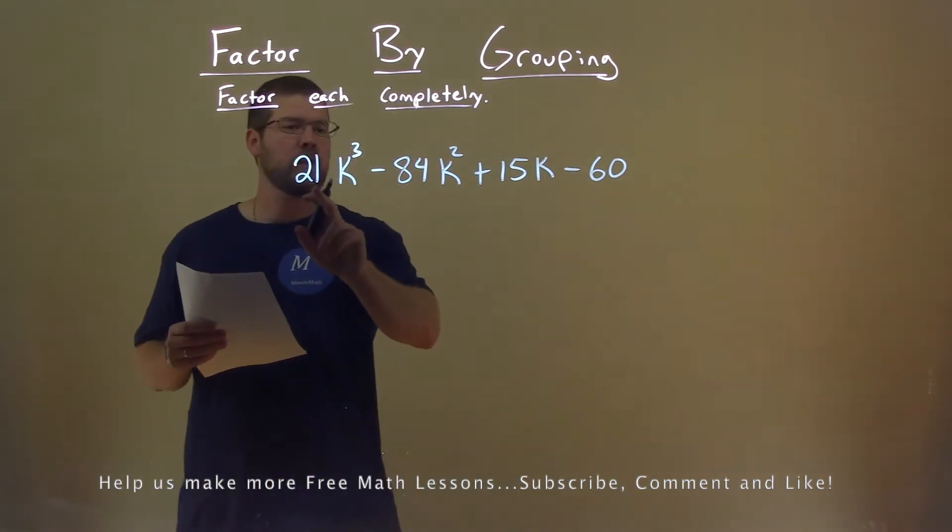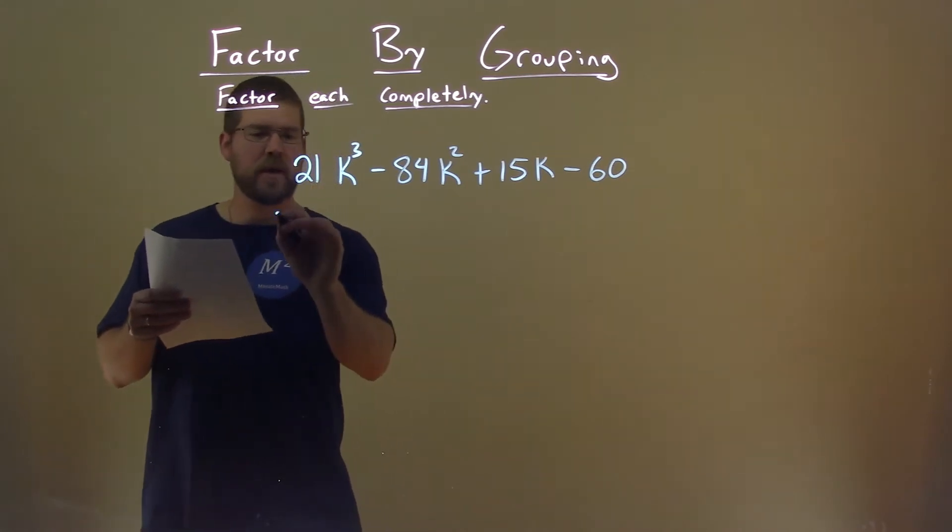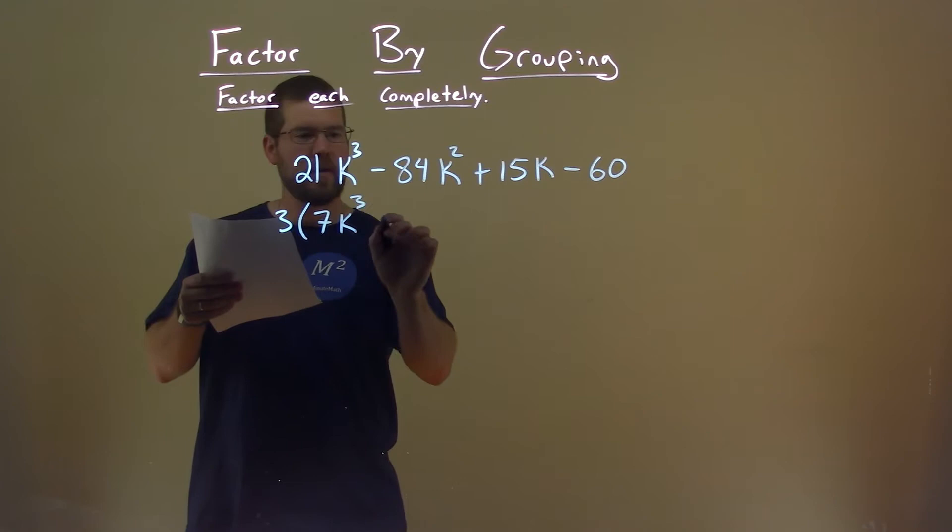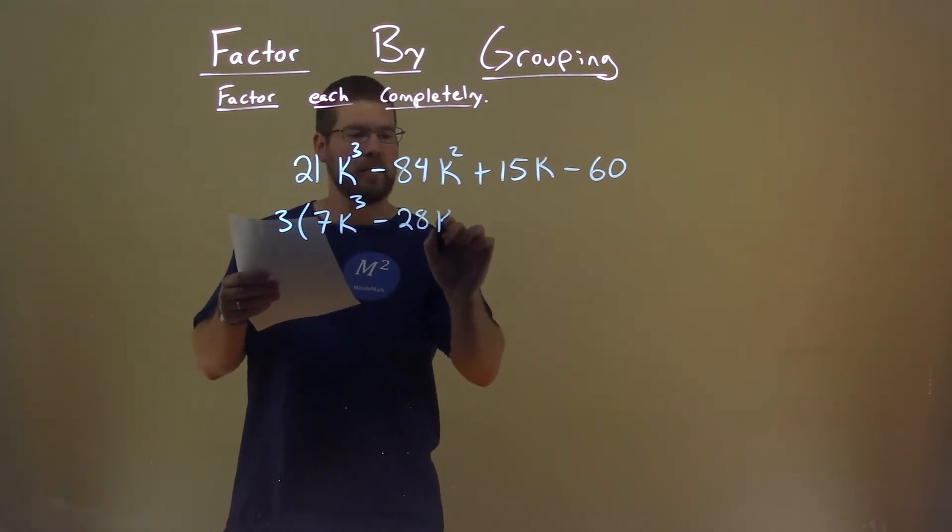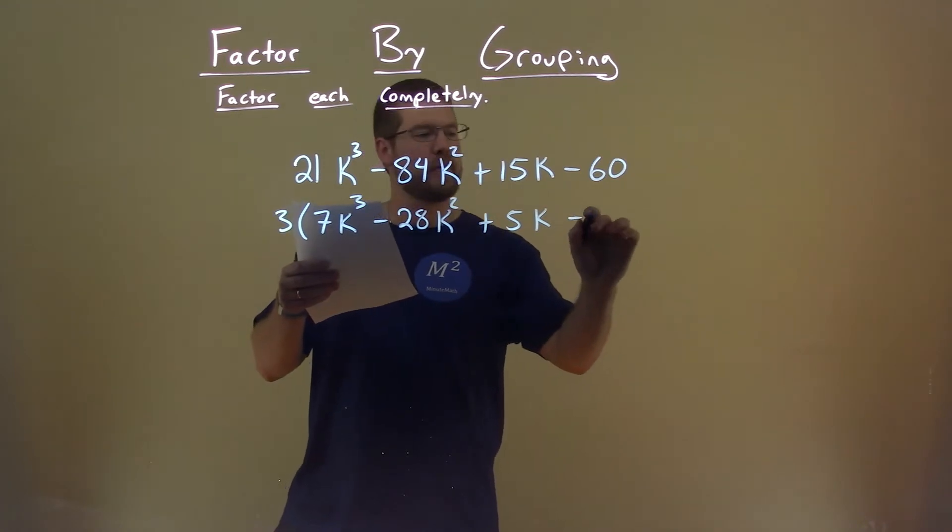Well notice 21, 84, 15, and 60 all have the number 3 within it. So if we pull out a number 3, we're left with 7k³ - 28k² + 5k - 20.